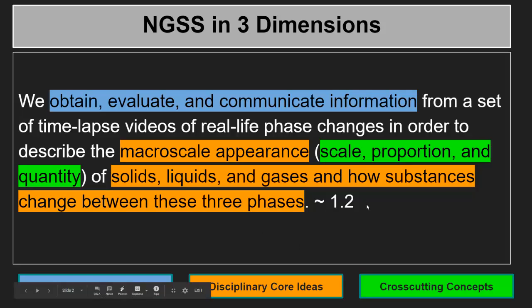Macroscale appearance of things means something you can see with your eyes — large scale — as opposed to microscale, or microscopic, which means smaller than the eye can see. You usually need a tool like a microscope to see it. So we're looking at big stuff right now, things we can see with our eyes. And we'll be comparing solids, liquids, and gases with water.